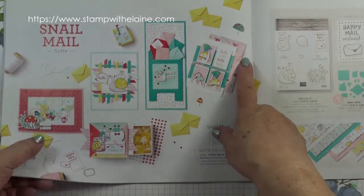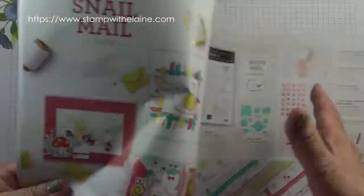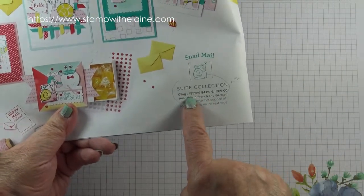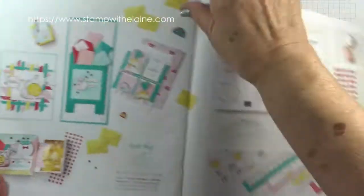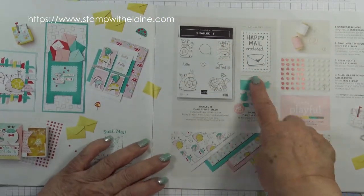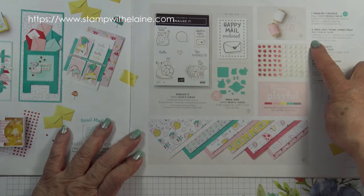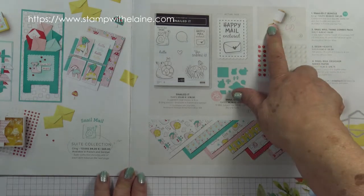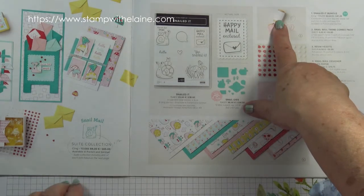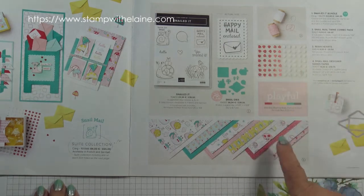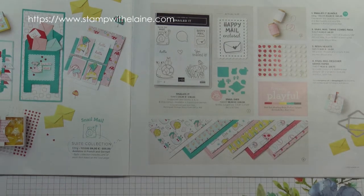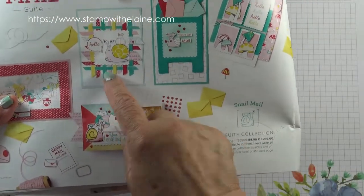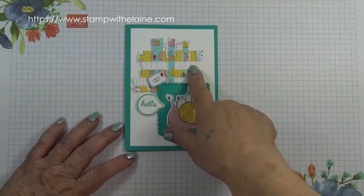If you want to purchase the entire suite there is a shortcut code where you just key in the suite collection code and it will give you the bundle price for the stamp set and dies and one each of these elements in the suite. So there'll be the snail mail twine combo pack, the resin hearts and the snail mail designer series paper. I took my inspiration from this card here which is a paper weaving background but I've tweaked it to make it my own.